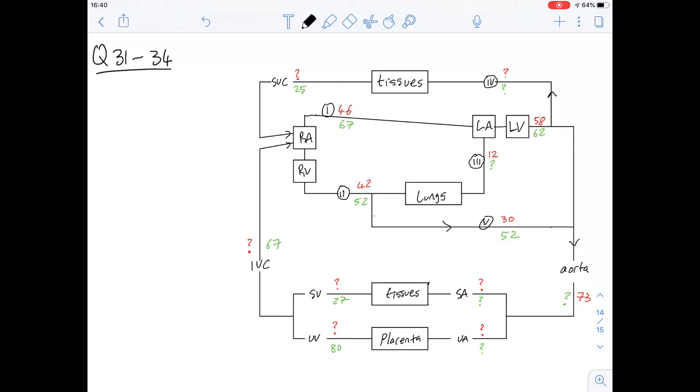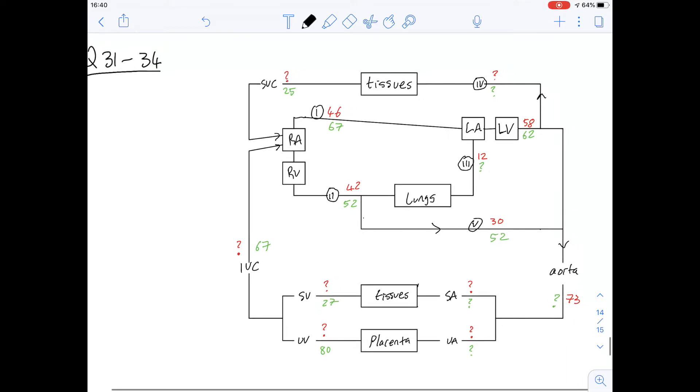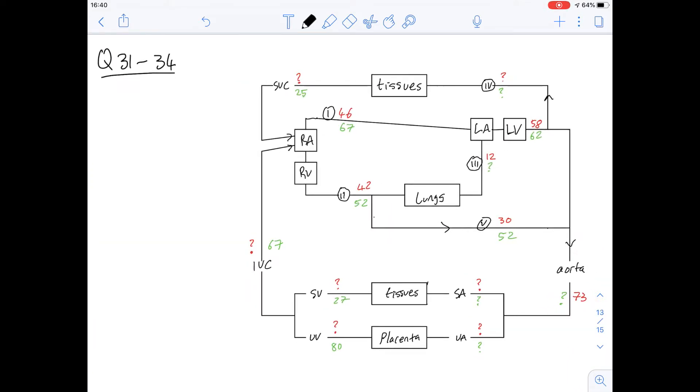And this is quite a confusing diagram, but just taking a second to get used to it, I think helps. Question 31 says, which of one to five are the shunts that normally close at birth? Okay, so looking at the ones that we've been given here. So number one is a linkage between the right atrium and the left atrium. So that is one that would normally close at birth. And that would, in the fetus, serve to move deoxygenated blood from the right hand side of the heart to the left hand side of the heart.